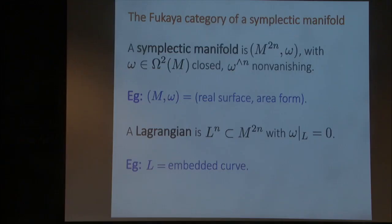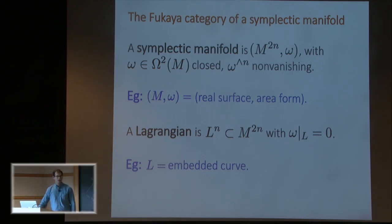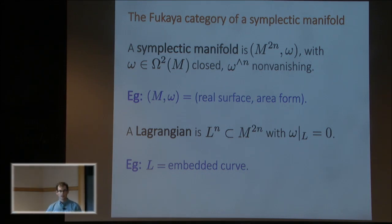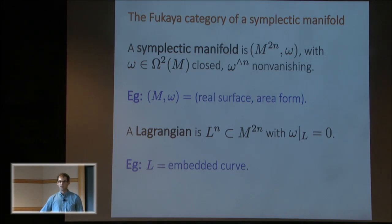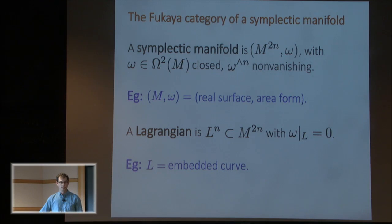There's a distinguished kind of submanifold called Lagrangian, which is a submanifold of half the ambient dimension on which omega, the symplectic form, vanishes. In the case of a real surface, that's just a curve. In the case of a smooth complex projective variety, the real locus is a Lagrangian.